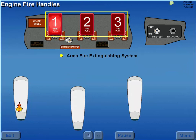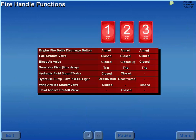The arming of the fire extinguishing system and isolation of the affected engine from the aircraft is controlled by the respective fire handle. Although the isolation of each engine is not identical, the basic functions are the same. The following items are affected when the respective engine fire handle is pulled.